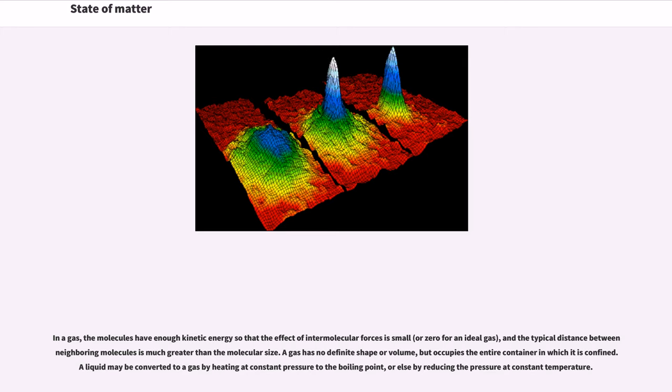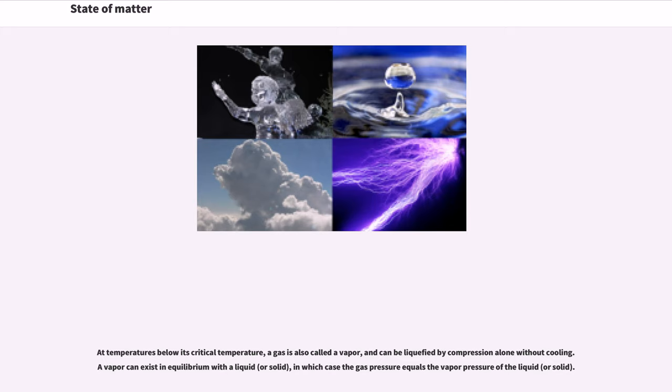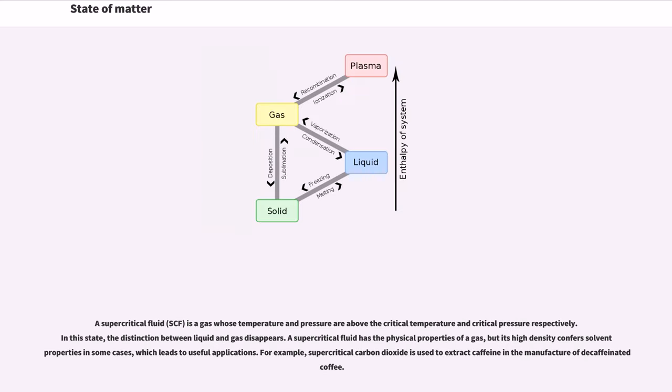A liquid may be converted to a gas by heating at constant pressure to the boiling point, or else by reducing the pressure at constant temperature. At temperatures below its critical temperature, a gas is also called a vapor, and can be liquefied by compression alone without cooling. A vapor can exist in equilibrium with a liquid, or solid, in which case the gas pressure equals the vapor pressure of the liquid, or solid. A supercritical fluid, SCF, is a gas whose temperature and pressure are above the critical temperature and critical pressure respectively. In this state, the distinction between liquid and gas disappears. A supercritical fluid has the physical properties of a gas, but its high density confers solvent properties in some cases, which leads to useful applications.